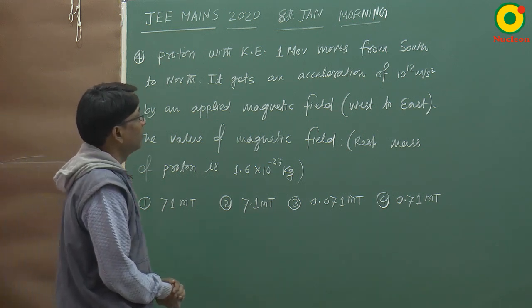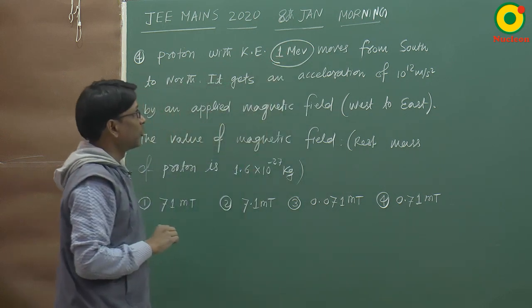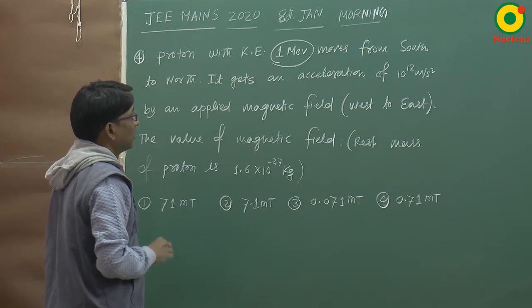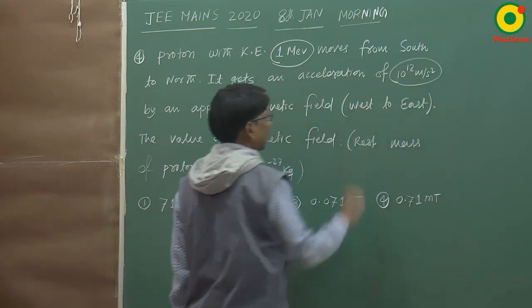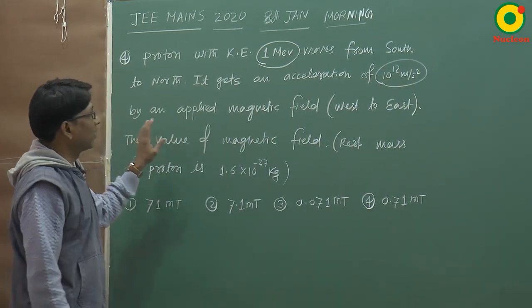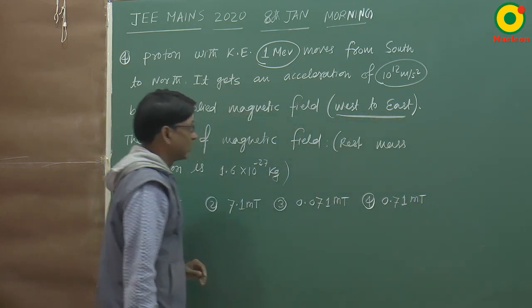A proton with kinetic energy 1 mega electron volt moves from south to north. It gets an acceleration of 10 to the power 12 meter per second square by an applied magnetic field whose direction is west from west to east.